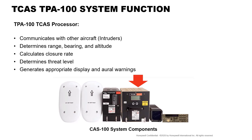The TCAS system monitors the airspace surrounding your aircraft by interrogating the transponder of intruding aircraft. The interrogation reply enables TCAS-2 to compute the following information about the intruder: range between your aircraft and the intruder, relative bearing to the intruder, altitude and vertical speed of the intruder if the intruder is reporting an altitude, and closing rate between the intruder and your aircraft. Using this data, TCAS predicts the time to and the separation at the intruder's closest point of approach, also known as CPA.